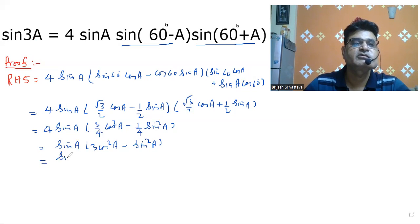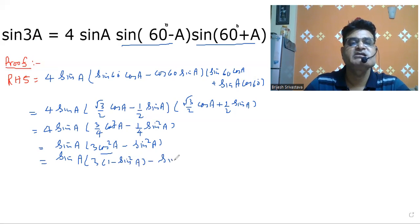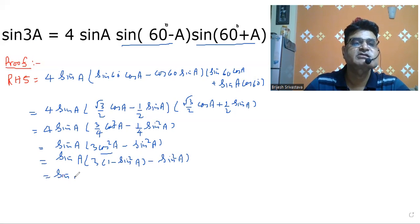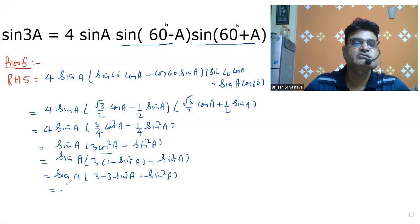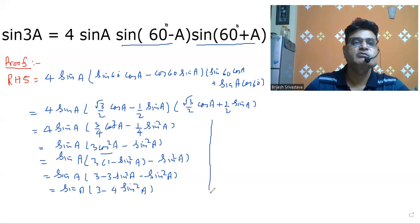We substitute cos²A = 1 - sin²A, giving us sin A into (3(1 - sin²A) - sin²A), which equals sin A into (3 - 3 sin²A - sin²A), which is sin A(3 - 4 sin²A).